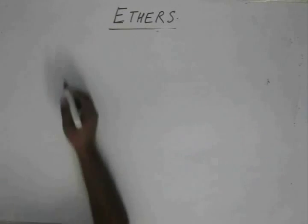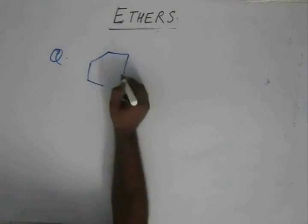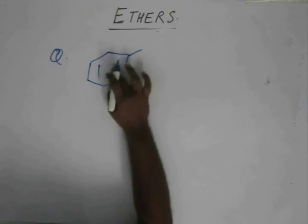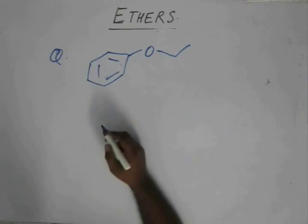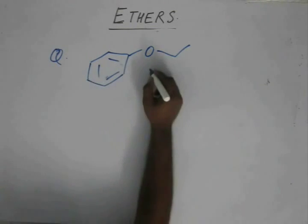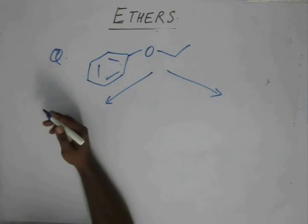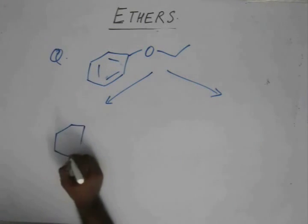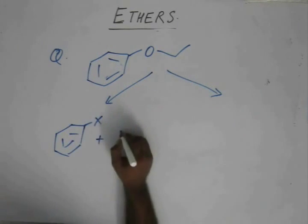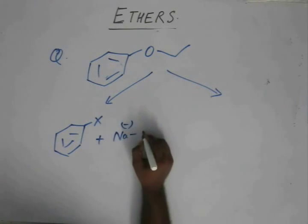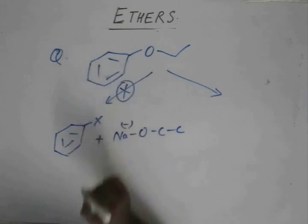Now, let us assume you need to prepare a phenyl or aromatic ether or an aryl ether like this. What would you use? Many people think that they could have used halobenzene plus the sodium salt of the aliphatic alcohol to obtain this, but this reaction won't take place.